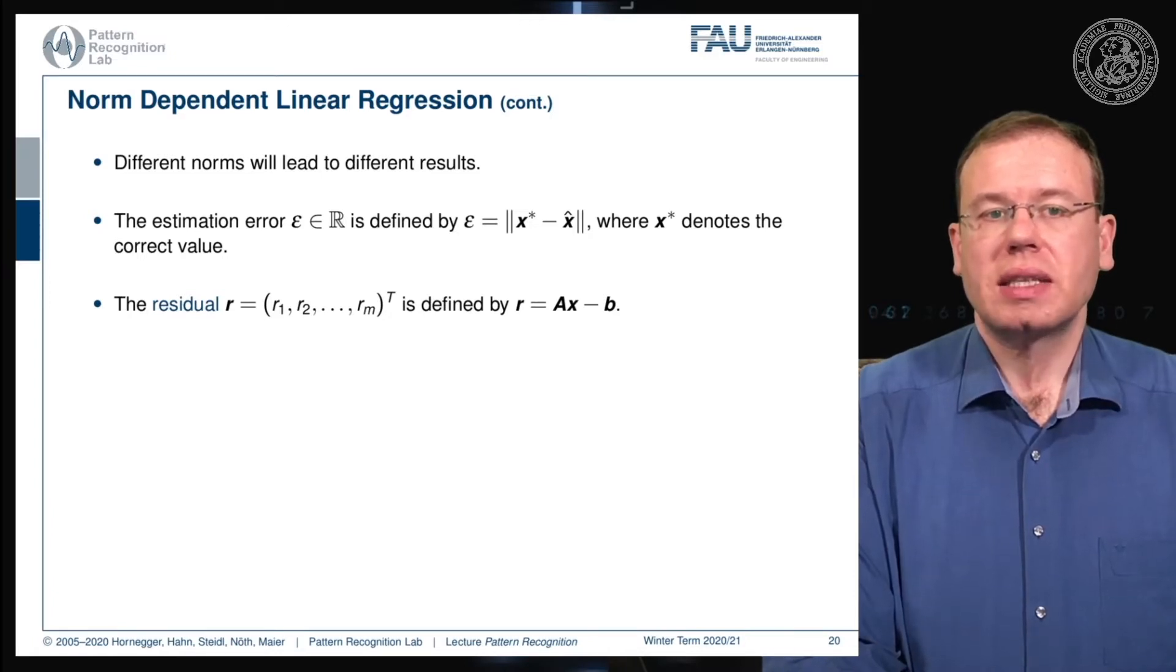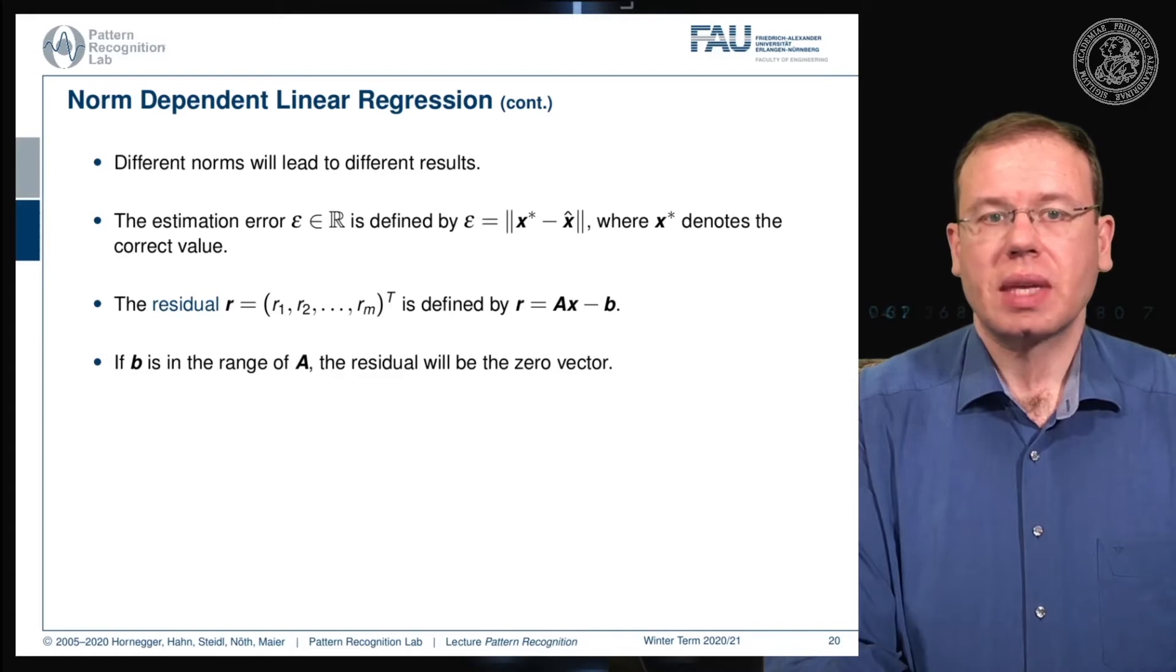This is essentially nothing else as Ax minus b, and the resulting vector gives us the residual terms. If b is in the range of A, the residual will be essentially a zero vector, so it can be completely projected.